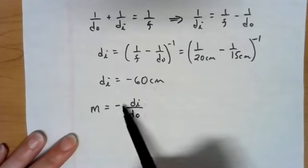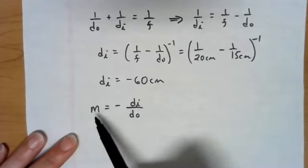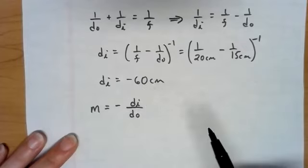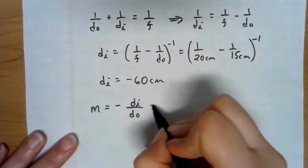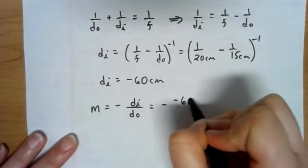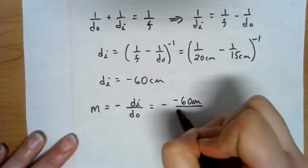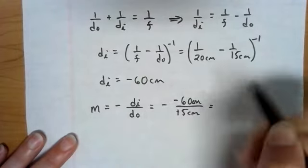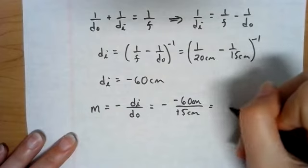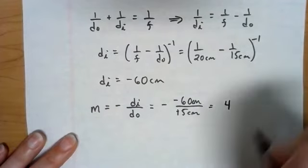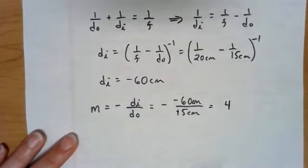So we're going to expect a much larger image. And if this is negative and that's negative, that's going to give us a positive M value, which according to our sign conventions means it will be upright. So this is going to be 4. So it's a magnification of 4.